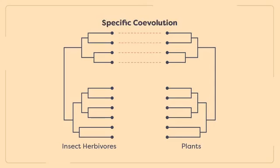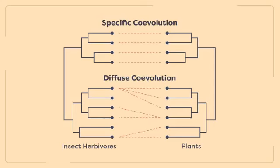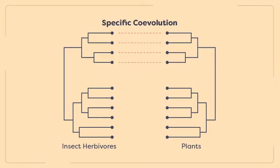Coevolution can be specific or diffuse. Specific coevolution involves only two closely interacting species and often results in an evolutionary arms race or tight mutualism. In this case, both species continuously evolve specific reciprocal adaptations in response to the other's traits.